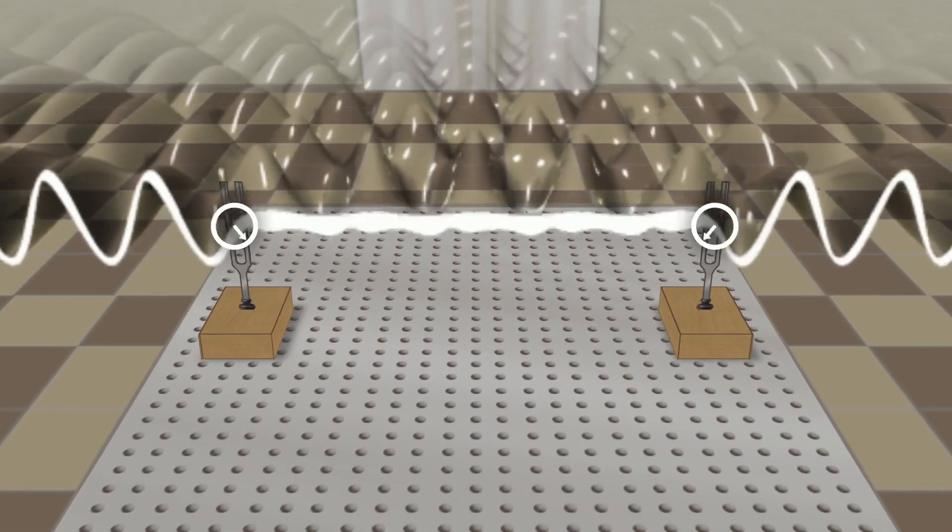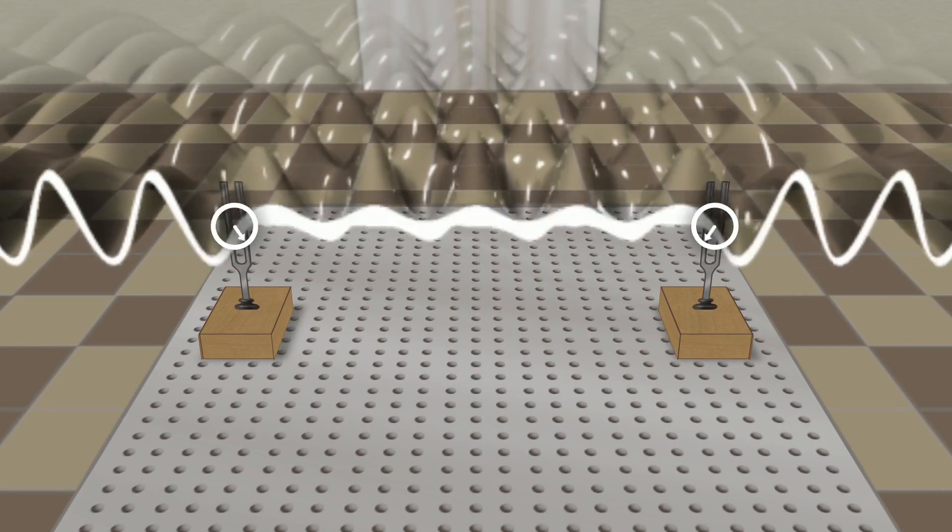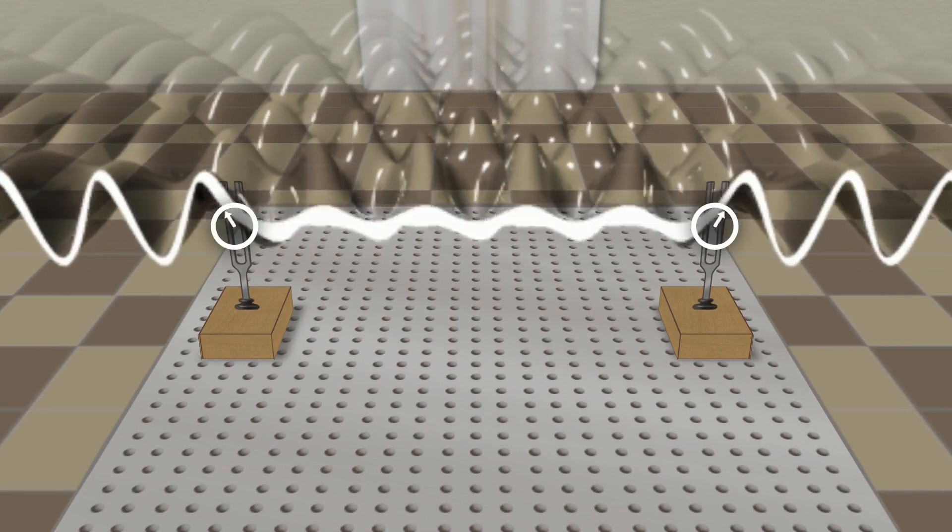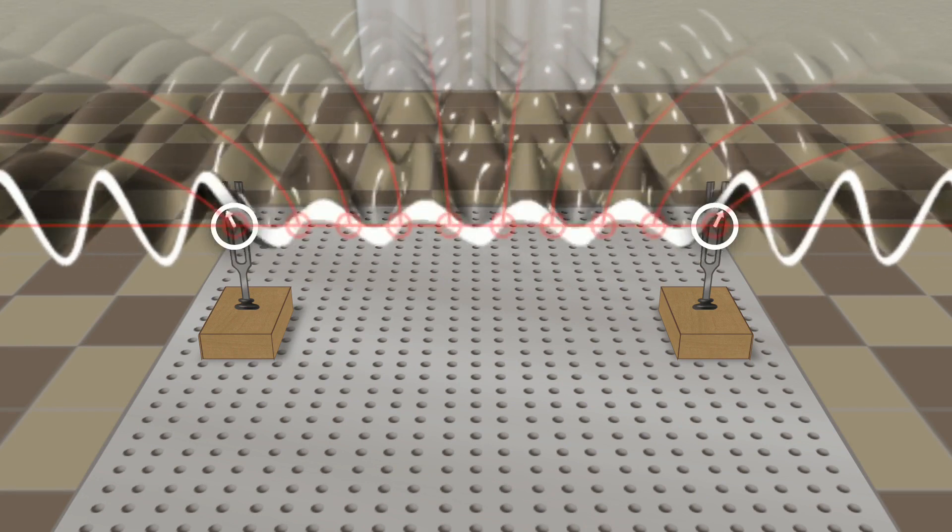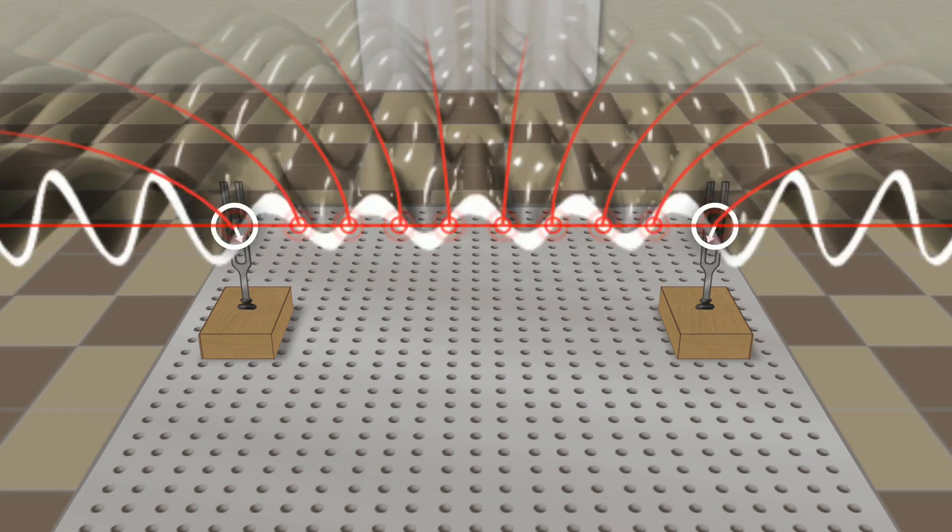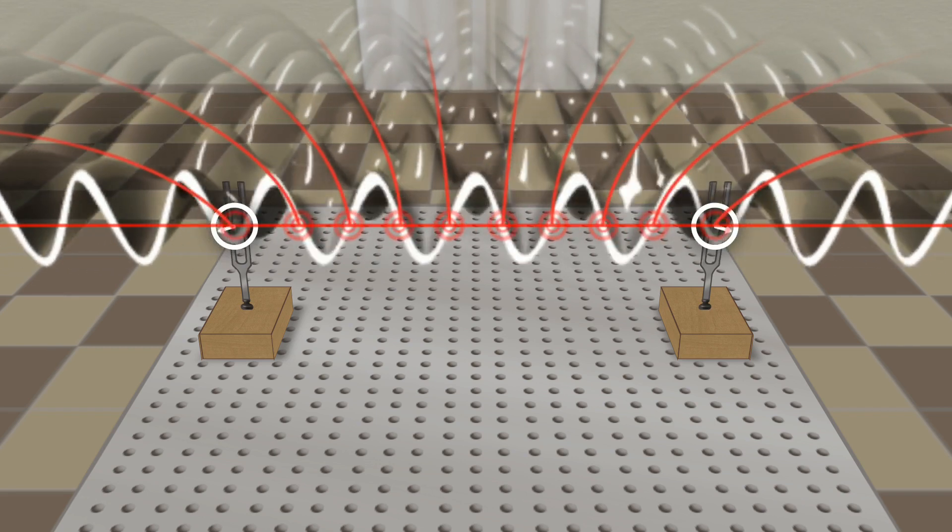Let us now consider a specific phenomenon that occurs on an imaginary line connecting two tuning forks. Two sound waves traveling in opposite directions interfere with each other, creating a so-called standing wave. The points where the two sound waves always cancel each other out are called nodes, and they are one half wavelength apart.